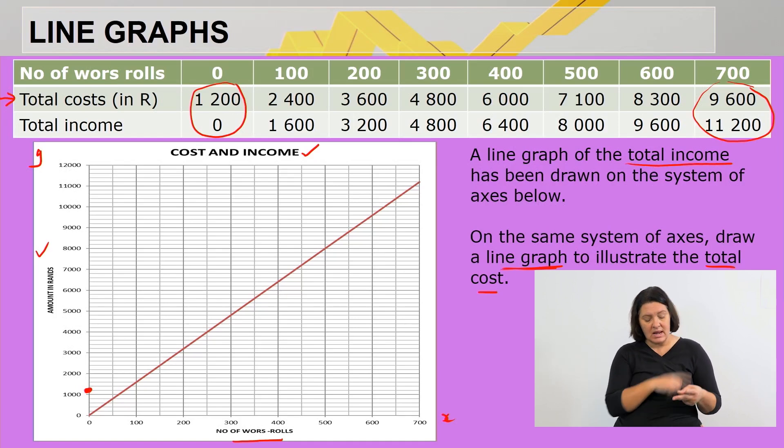The next ordered number pair: if we sell 100 wors rolls, what should the total cost be? R2,400. So I'm looking at 100, there we go, and then the total cost is 2400. Next, for selling 200 of these wors rolls, there's 200, the total cost will be 3600. So I go 3200, 3400, 3600, where does it meet? There, can you see? It's like this: 200 all the way up, where does it meet? That's where I plot the point.